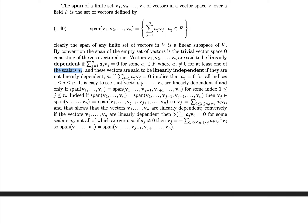A set of vectors is called linearly independent if they are not linearly dependent. So we say that if the sum of a_j * v_j equals zero implies that all a_j must be zero for all indices from one to n, then they are linearly independent.